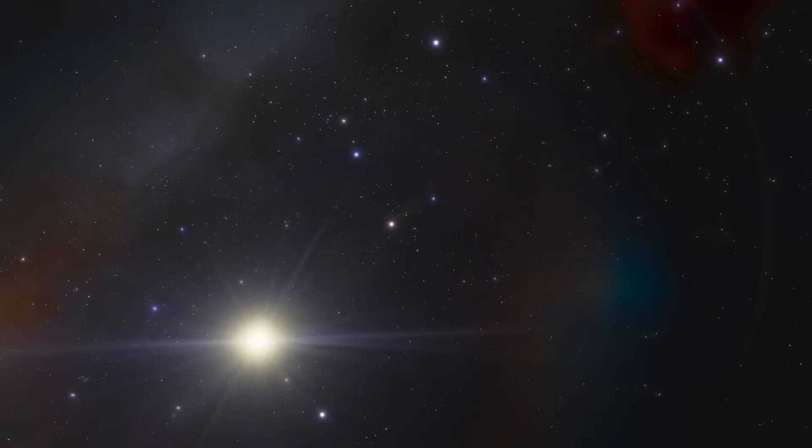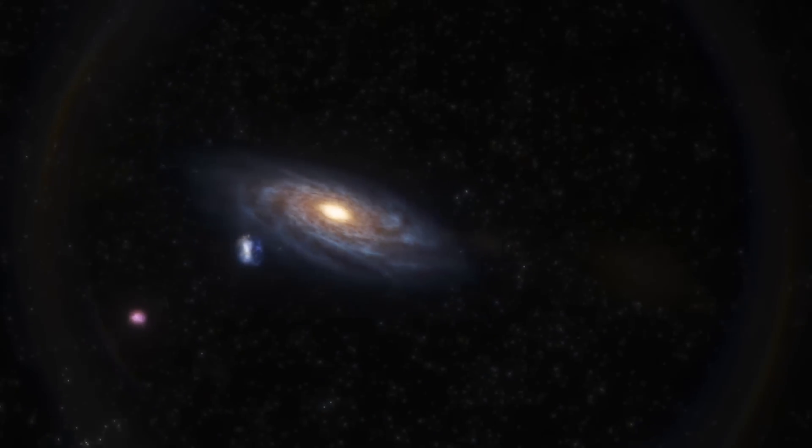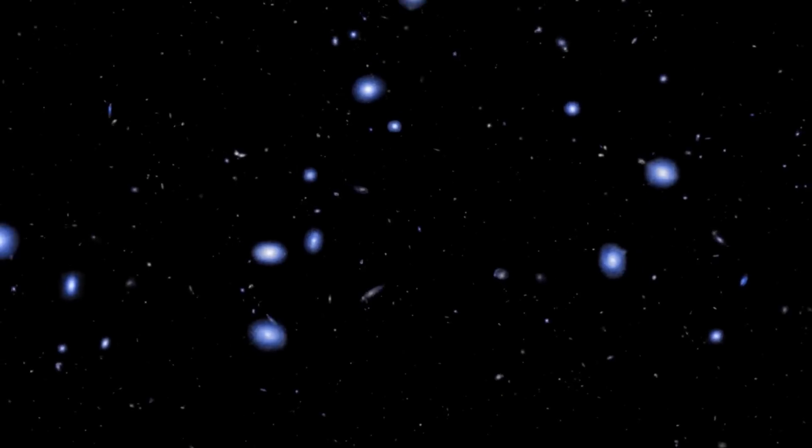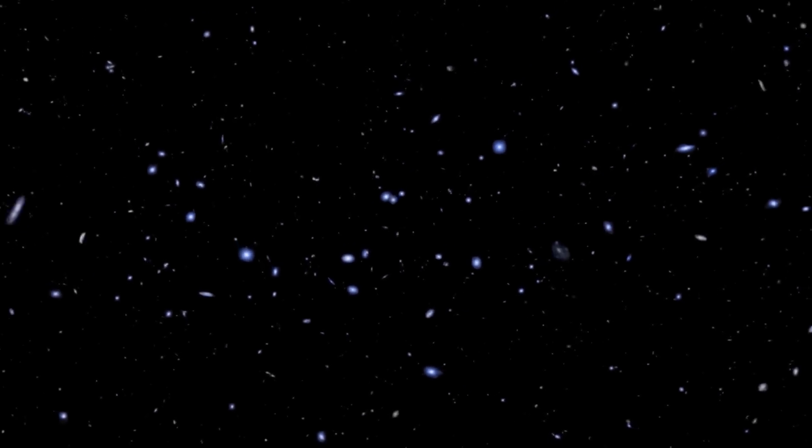We can compare the expansion of the universe to a loaf of raisin bread baking in an oven. In this analogy, the galaxies act like the raisins in the bread. As the dough expands, the raisins become more and more separated from each other.